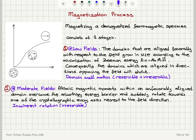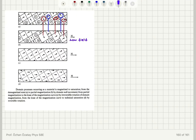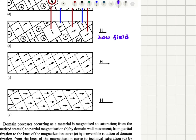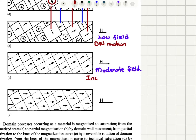There will be an anisotropy barrier to go back to the original state, so it's going to be irreversible. The domains that were in different directions, not in a favorable configuration with respect to the magnetic field, will rotate towards the easy axis that favors the applied magnetic field. So this is the moderate field scenario: first domain wall motion, and in the second step incoherent rotation towards the easy axis nearest to the applied magnetic field.